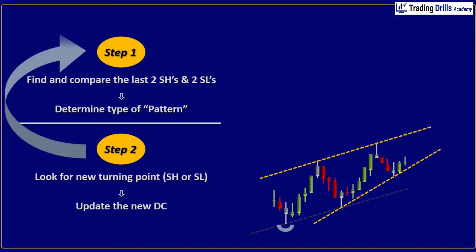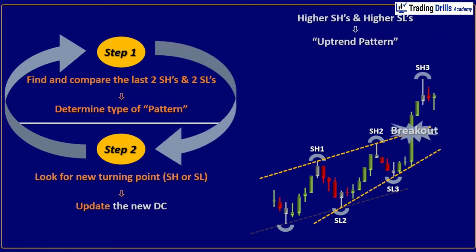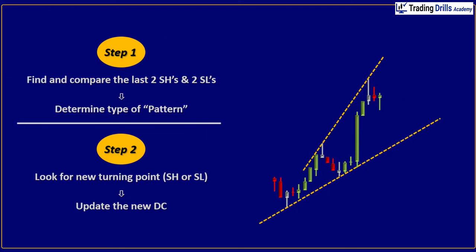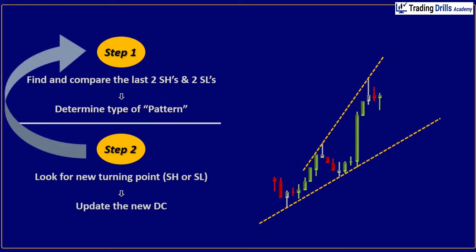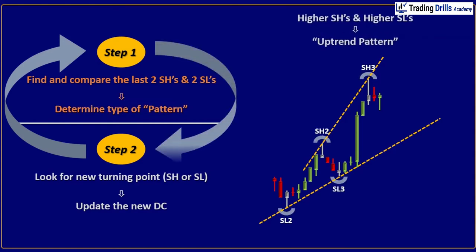Then repeat step 1 and compare the last two swing highs and two swing lows and determine the type of pattern. And again follow step 2, look for a new turning point and update the new dynamic channel. Again repeat step 1, determine the type of pattern, and follow step 2 to look for a new turning point and update the new dynamic channel.